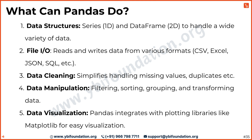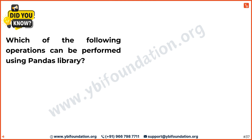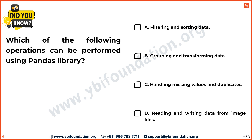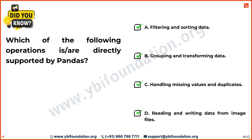And finally, pandas provides basic data visualization capabilities, so you can create charts and graphs to see your data in action. Time to check your understanding: which of the following operations can be performed using the pandas library? Option A: filtering and sorting data. Option B: grouping and transforming data. Option C: handling missing values and duplicates. Option D: reading and writing data from image files. Pandas library can be used for completing all the tasks mentioned in options A through D.